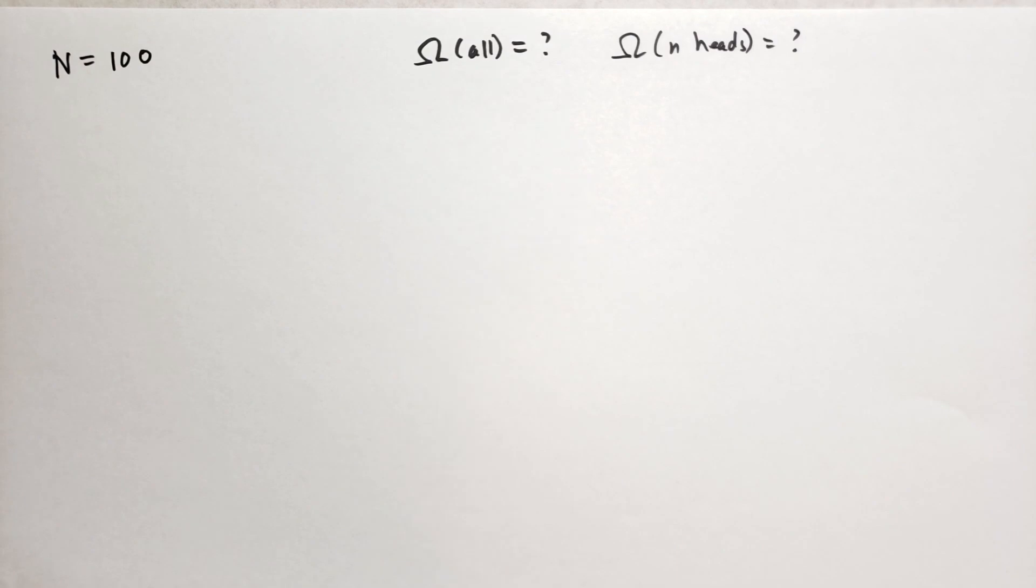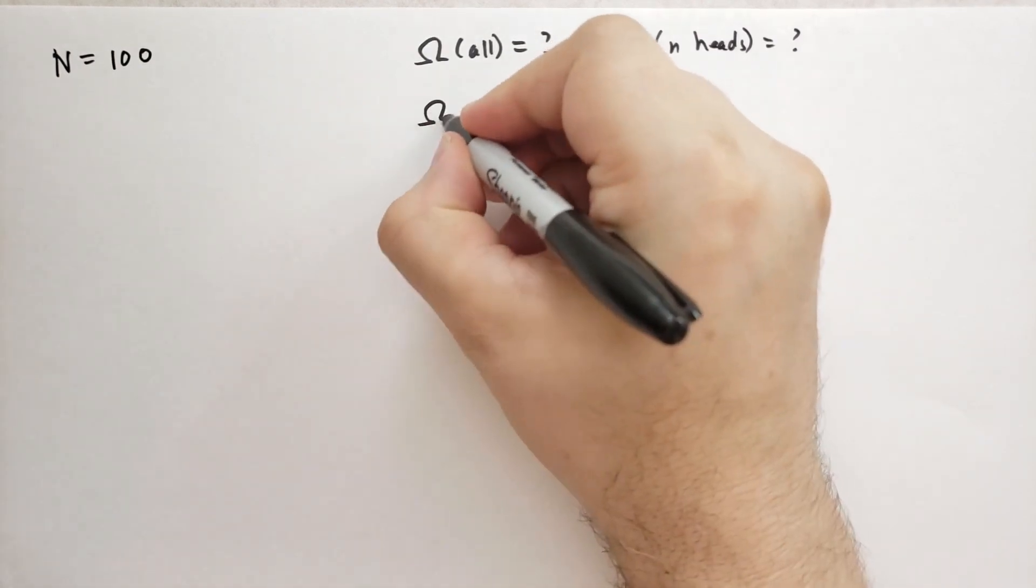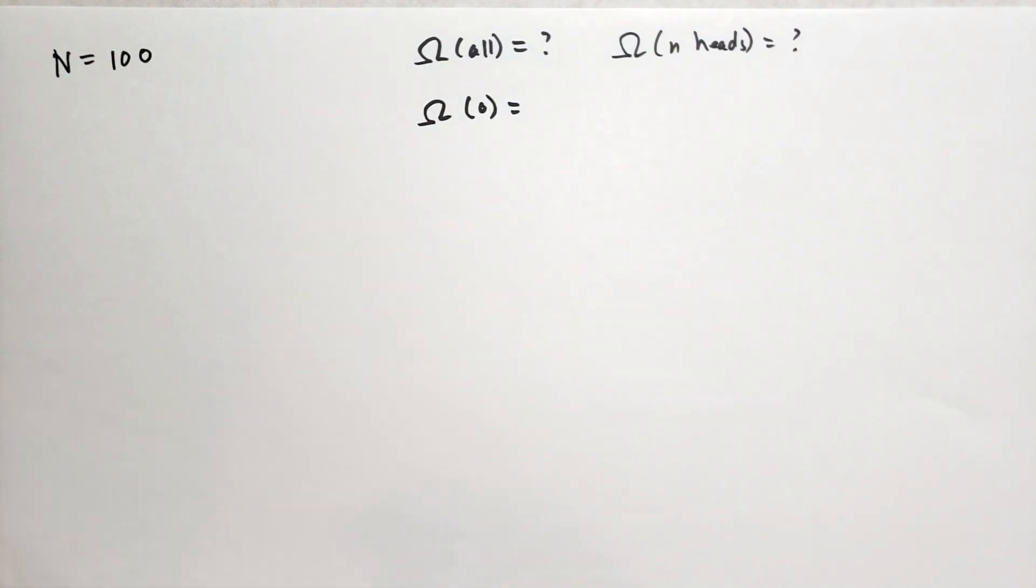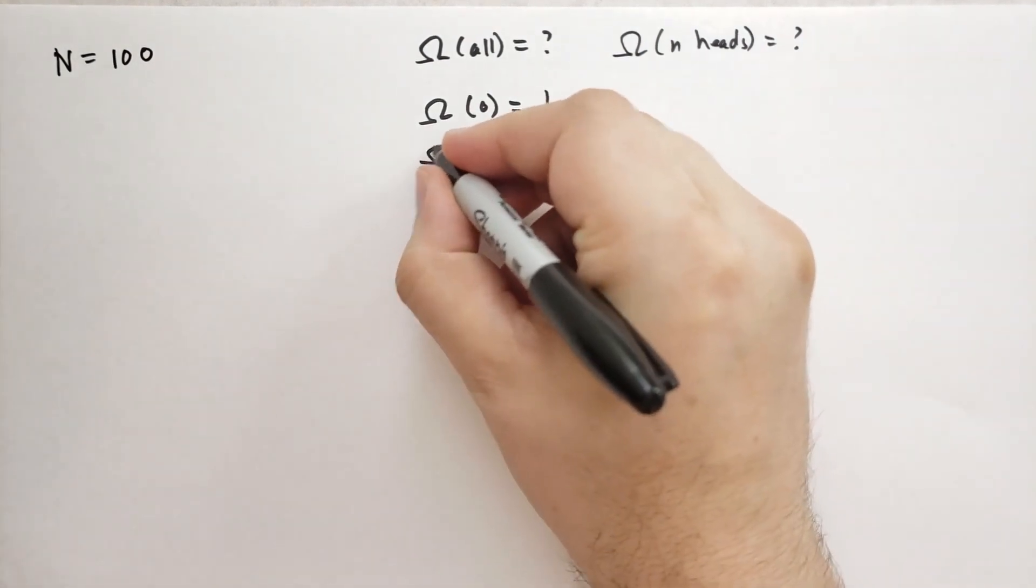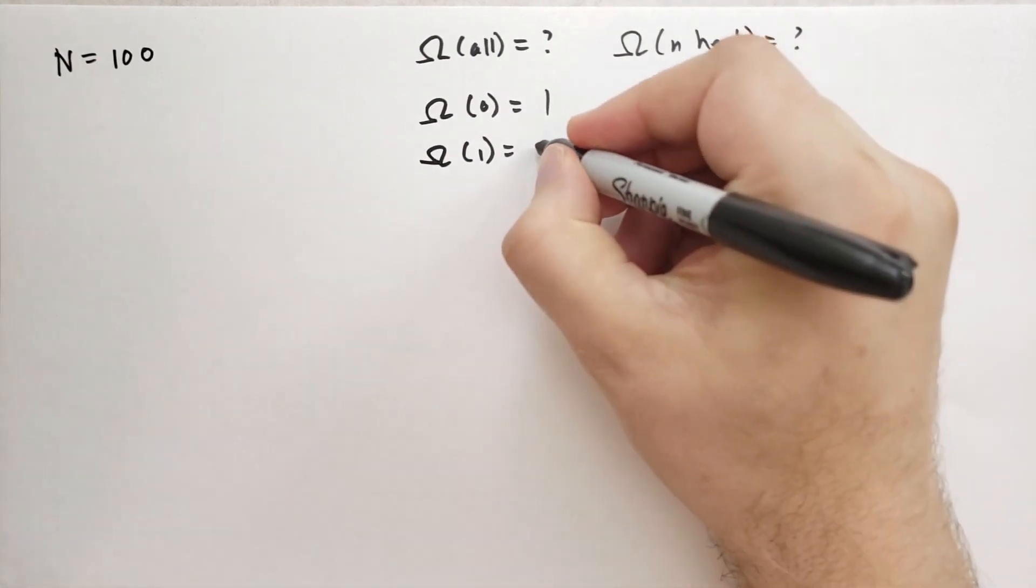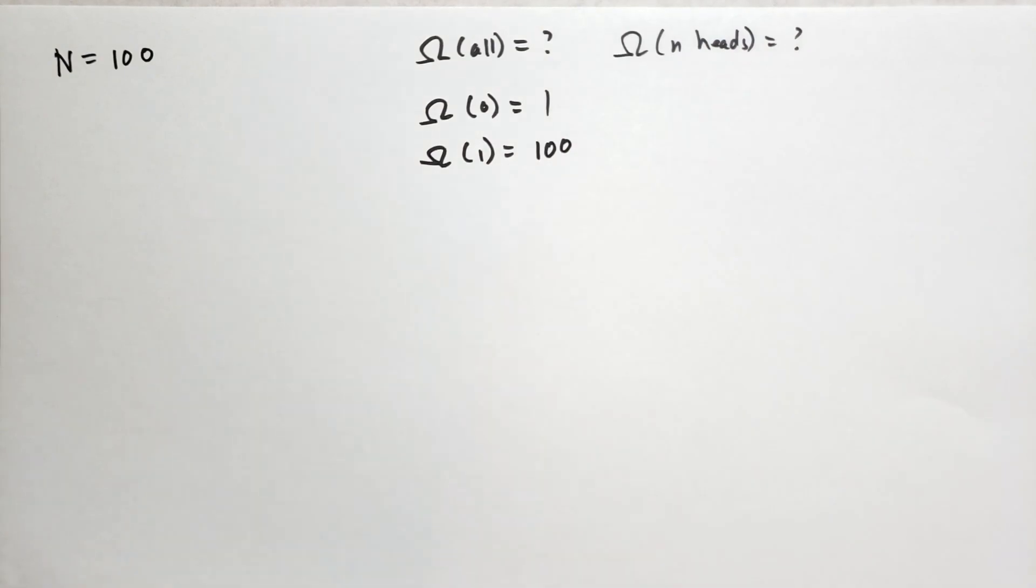So first, let's consider what is the possibility of getting zero heads. Well, there's only one possible combination, all tails, that will give us zero heads. What about how many different ways can we get one head? Well, we can take each of the coins and say, well, if this coin was the only coin that's a head, and that coin's the only coin that's a head, and so on. So we're going to have 100. There's 100 possible ways to do that.